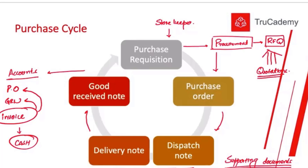Not all of these documents are necessarily involved in every organization's purchase cycle — it depends from business to business. For example, a purchase order will be common across all organizations, but a Goods Received Note might just be a copy of the delivery note used as such. What we are discussing here is an ideal situation; in practice, the documents can be even fewer or more than this.